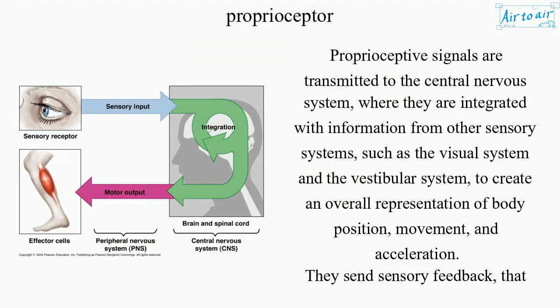Proprioceptive signals are transmitted to the central nervous system, where they are integrated with information from other sensory systems, such as the visual system and the vestibular system, to create an overall representation of body position, movement, and acceleration.